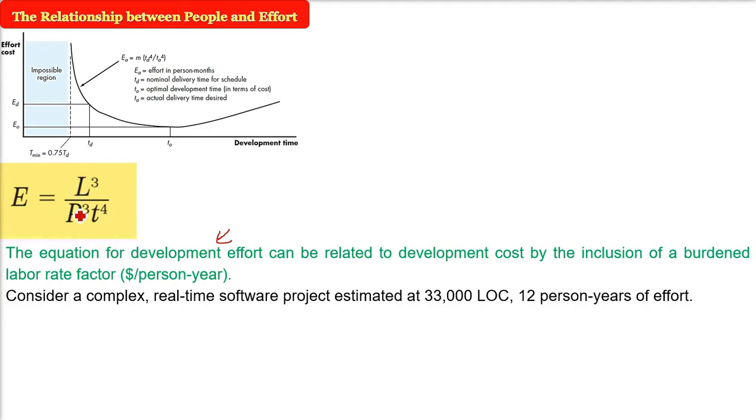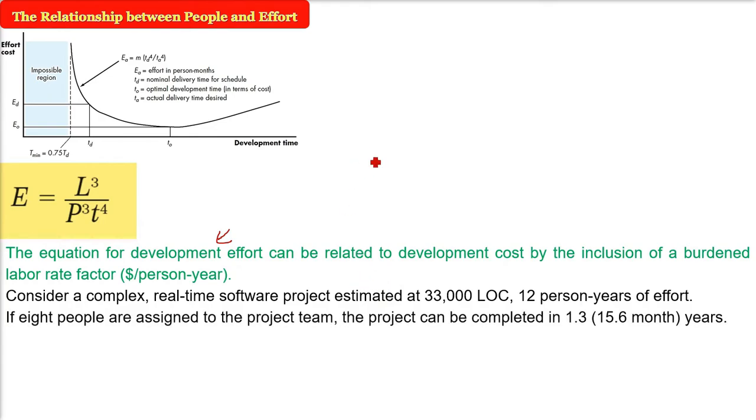Just consider a complex real-time software project estimated at 33,000 lines of code. The capital L is 33,000. The effort is 12 person years. So let me just write it and put these values. I just want to show what is going on here. Effort is 12 and 33,000 is L, and we have to cube it. And P is 12,000 we are going to take here, and time t to the power 4.